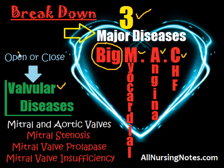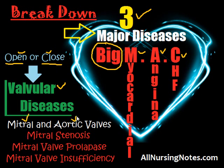The second category involves the valvular diseases. When we say valvular disease, we are talking about the heart valves that have problems with opening or closing. Going back to the anatomy of the heart, we know the heart has several valves — the mitral valve, the tricuspid valve, the aortic valve, and the pulmonic valve. But with valvular diseases, we're only going to focus on two particular valves: the mitral and the aortic.